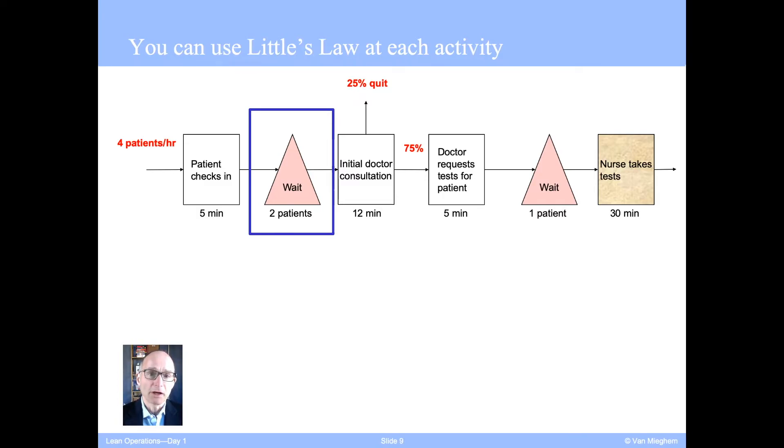So we are not given that information. However, we are given that on average, two patients are waiting, and we also have the average throughput, which is four patients per hour. Therefore, we can directly apply Little's Law, inventory is two patients. Throughput is four patients per hour. Therefore, the average flow time through the buffer, which is the average waiting time, is inventory divided by throughput, is 30 minutes.